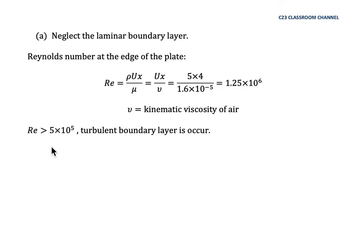The critical Reynolds number is 5 × 10⁵, and what we get here is a Reynolds number larger than the critical value. This means the boundary layer is in a turbulent condition.